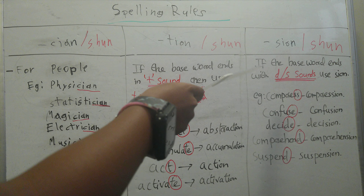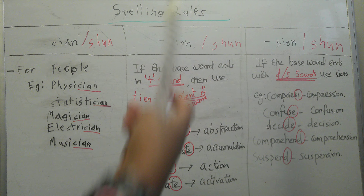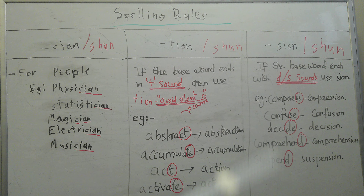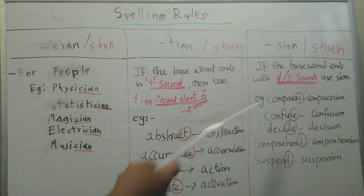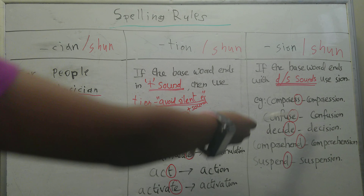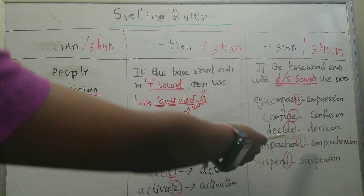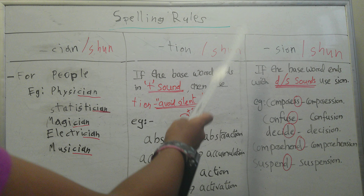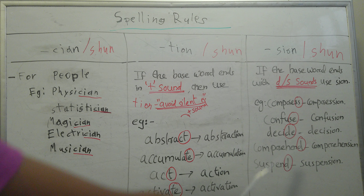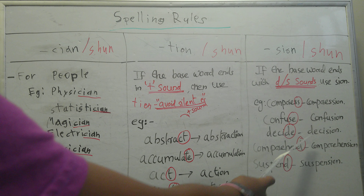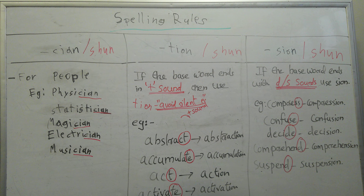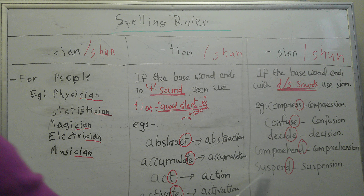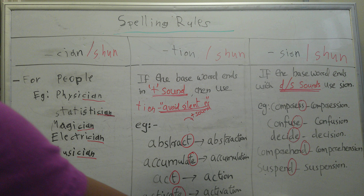Now for S-I-O-N, also making the 'shun' sound: if the base word ends with a 'd' or 's' sound, we use S-I-O-N. For example, 'compress' becomes 'compression' because it has the 's' sound. 'Confuse' becomes 'confusion'. 'Decide' has the 'd' in it and becomes 'decision'. 'Comprehend' becomes 'comprehension', and 'suspend' with the 'd' becomes 'suspension'.